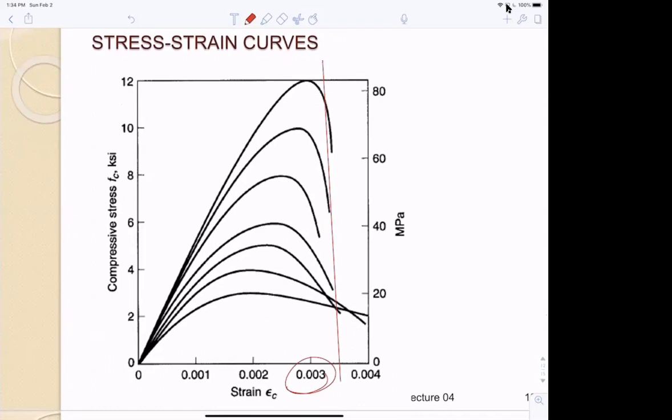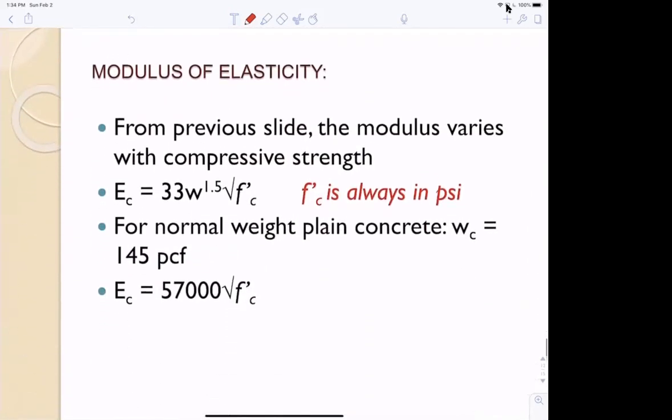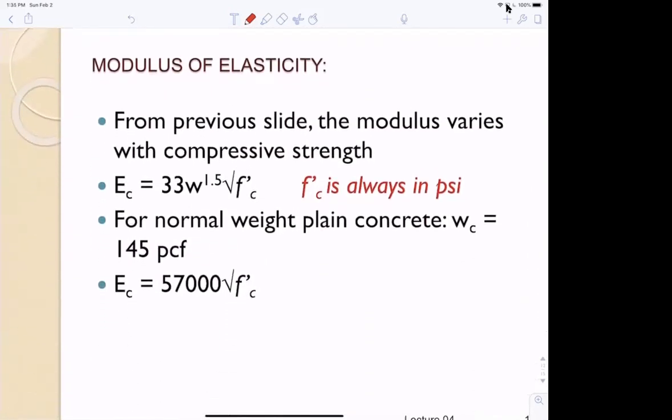And then, as you go up in F prime C, here are all the maxima. See how the maximum is happening at a higher strain. As you increase the strain, the thing I want you to see is how the slopes are increasing. So a higher strength concrete has a higher modulus of elasticity or E.